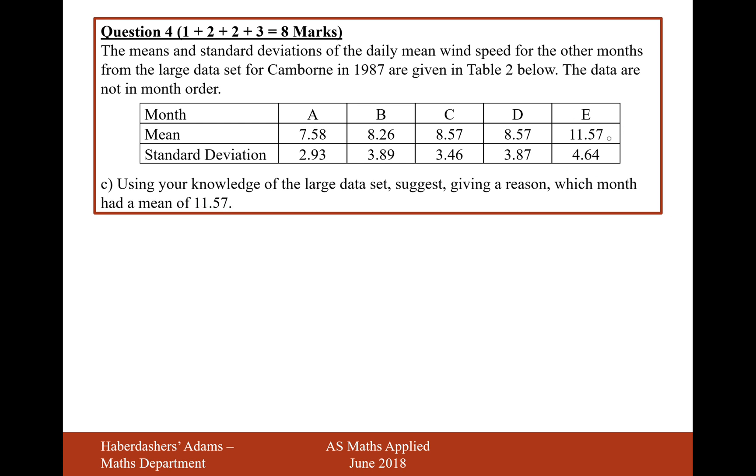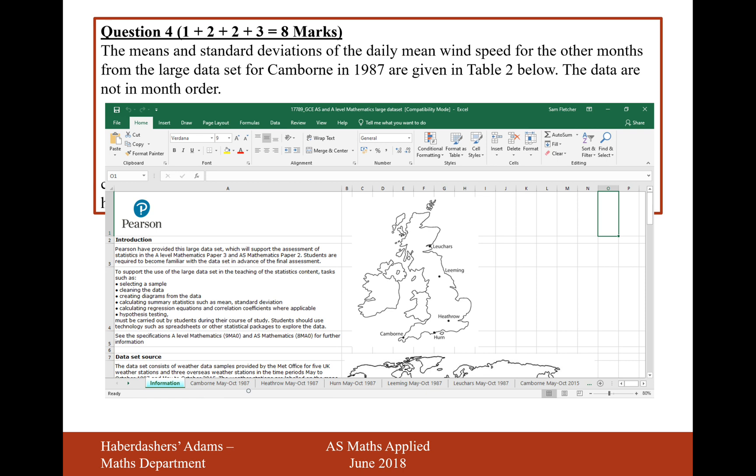So that's effectively which month was the windiest month. Now, just for some knowledge of the large data set, just from this screen here, I know that the data set goes from May to October, and Camborne is in Cornwall in Britain. So now that we know this fact, we've got to think, okay, which month in Cornwall was probably the most windiest from May to October?